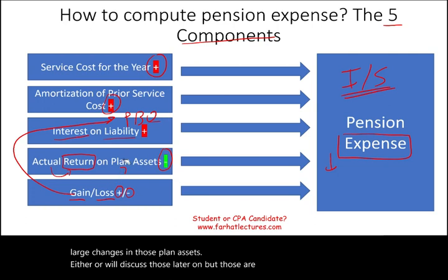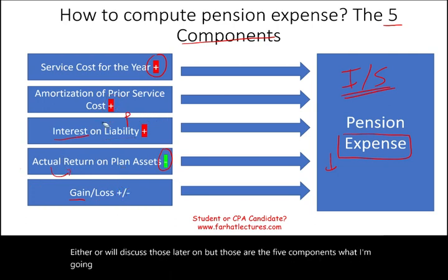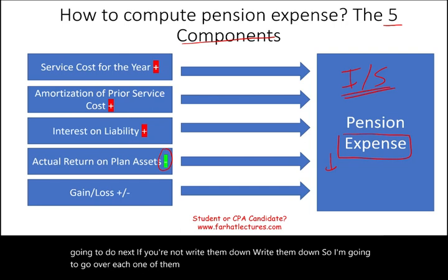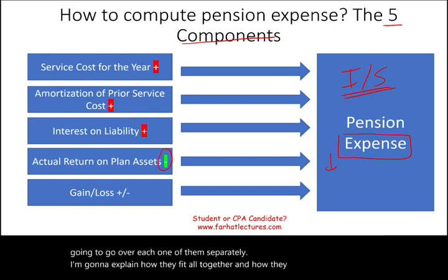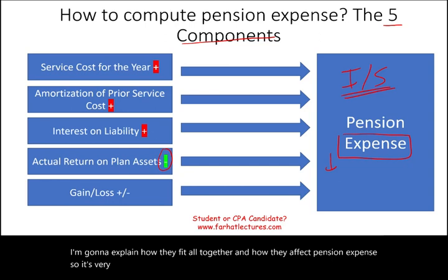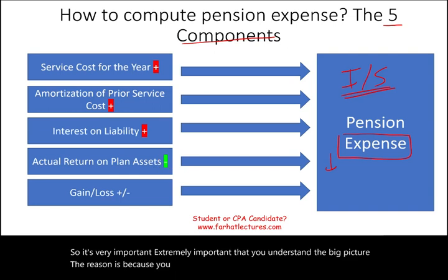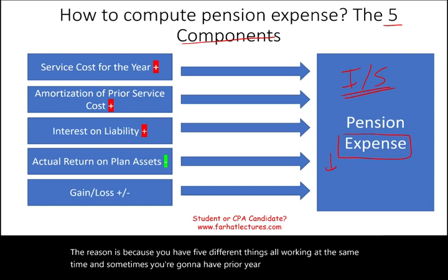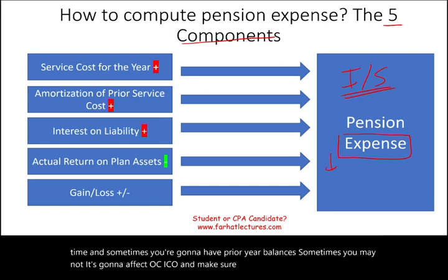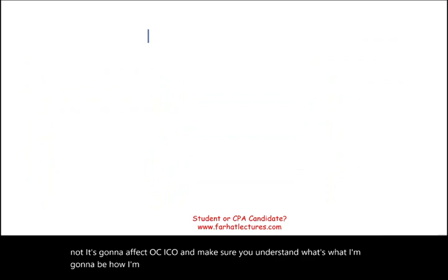Those are the five components. I'm going to go over each one separately and explain how they fit together and how they affect pension expense. It's extremely important you understand the big picture, because you have five different things all working at the same time. Sometimes you'll have prior year balances, sometimes you may not. It's going to affect OCI, so you want to make sure you understand how I'll be explaining this next.